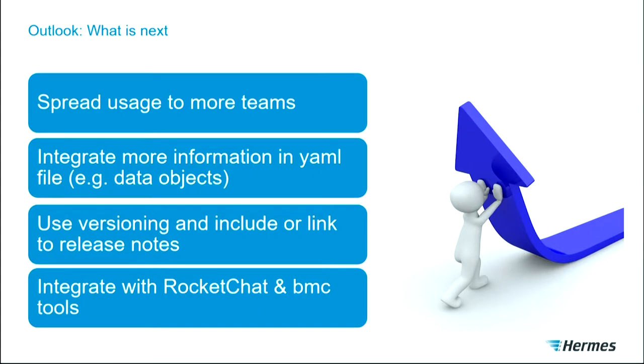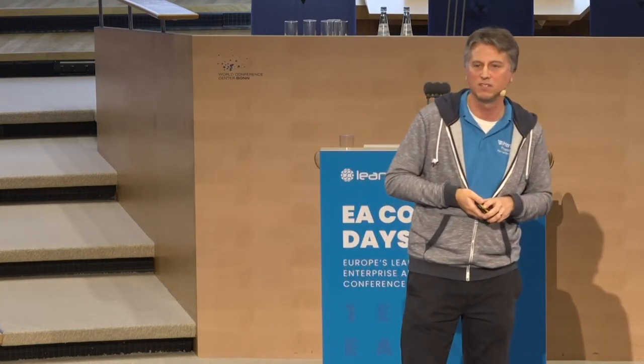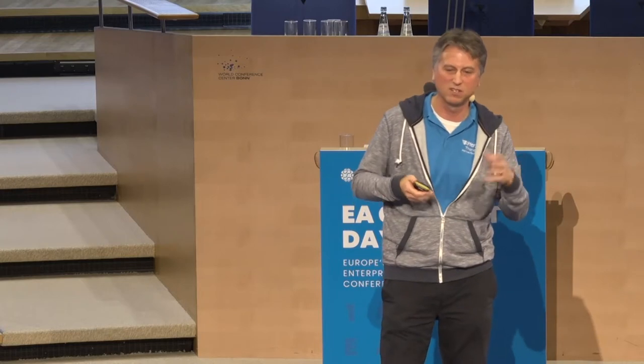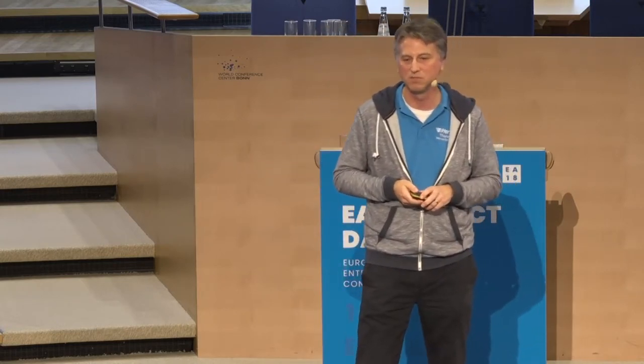Today we have about two to three teams running with the microservice add-on. We want to extend this to about 15 development teams. We also want more integration in the files — for example, data objects having direct links in applications. We want to extend versioning usage and address where we document deployments and release notes, potentially as links in LeanIX. Further integration with Rocket Chat — our Slack equivalent — and with BMC hardware and CMDB tools is also planned.